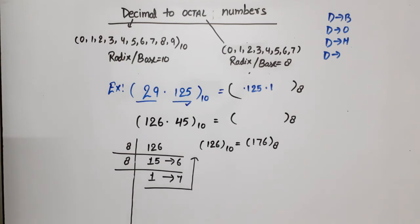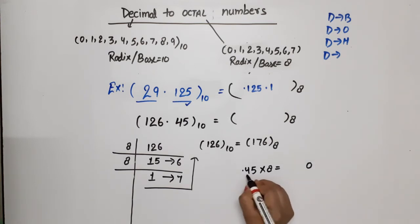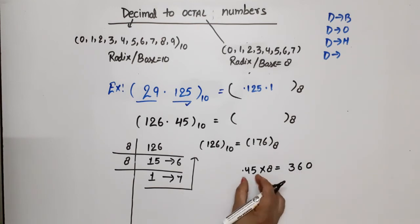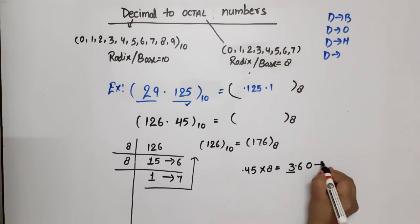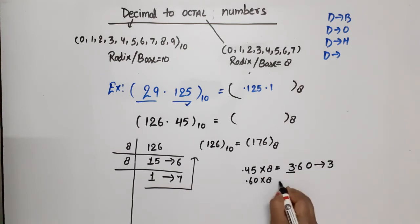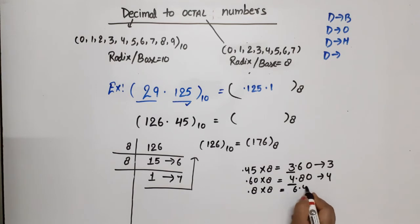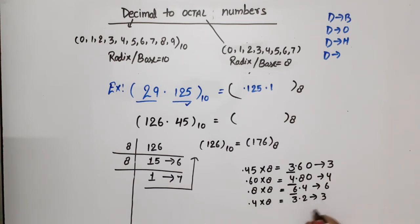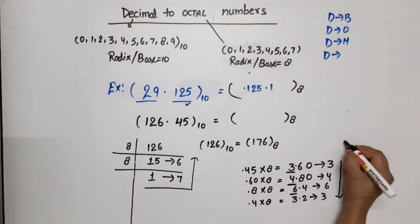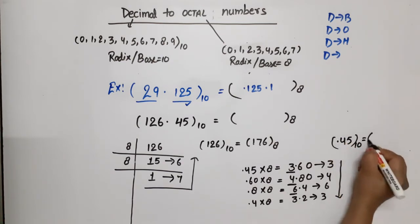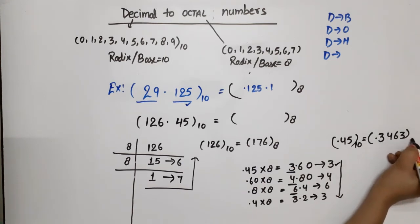Now for the fraction 0.45 we multiply by 8 repeatedly: 0.45 × 8 = 3.6, integer part 3. 0.6 × 8 = 4.8, integer part 4. 0.8 × 8 = 6.4, integer part 6. 0.4 × 8 = 3.2, integer part 3. Reading up to downward, 0.45 in base 10 equals 0.3463 in base 8.